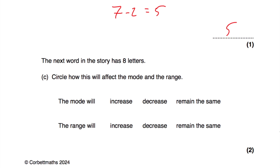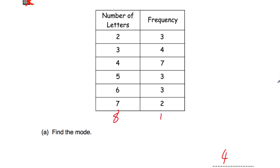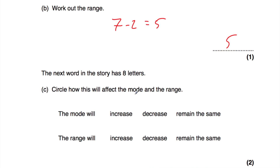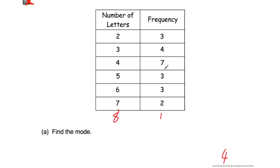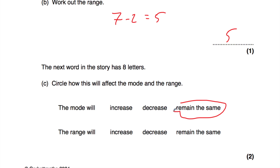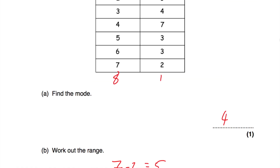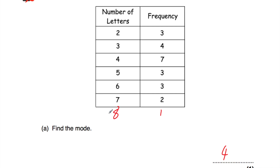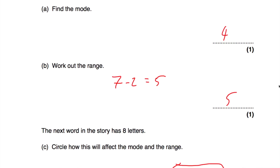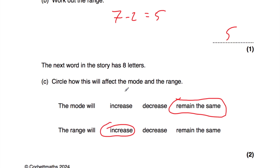Part C: the next word in the story has 8 letters. We're asked how this will affect the mode and the range. For the mode: there's only one word with 8 letters, so the highest frequency is still 4-letter words — the mode remains the same. For the range: the biggest word now has 8 letters, so we do 8 subtract 2 equals 6. The range will increase from 5 to 6.